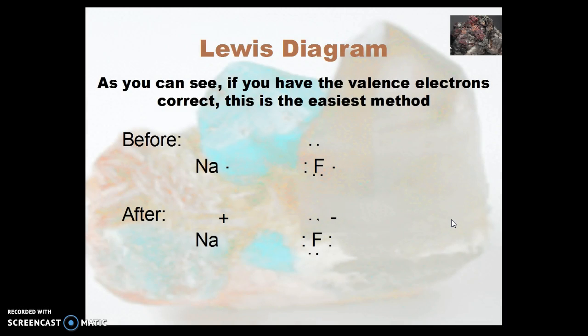Now, the easiest method, of course, is the Lewis diagram. We see before and after the transfer of the electrons.